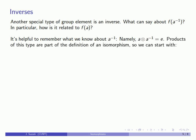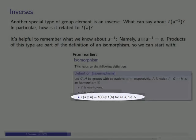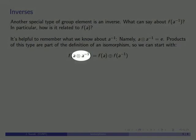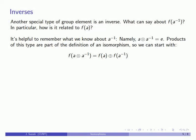Products of this type are part of how we define an isomorphism because isomorphisms preserve the group operation. So I know that F of A times A inverse must be F of A plus F of A inverse. Again, the times is the group operation in G, the plus is the group operation in H. Now on the left hand side, I know A times A inverse is the identity element, so I'll replace that.